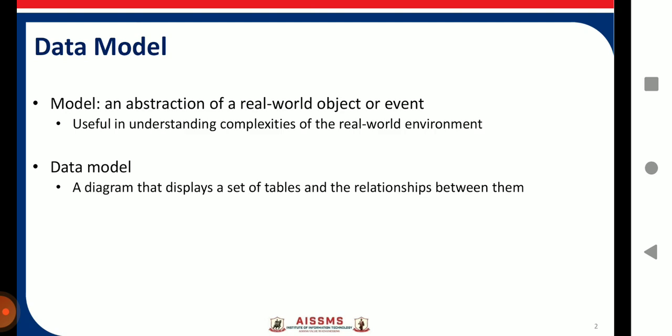Data model defines how the logical structure of the database is modeled. Data models are fundamental entities to introduce abstraction in a DBMS. Data models define how data is connected to each other and how they are processed and stored inside the system. The very first data model could be flat data models where all the data used are to be kept in the same plane. Data model is a diagram that displays a set of tables and a relationship between them.